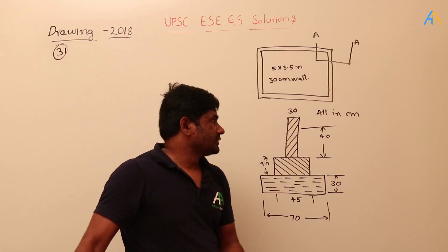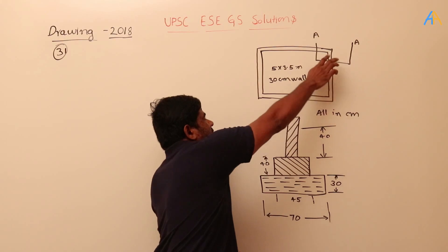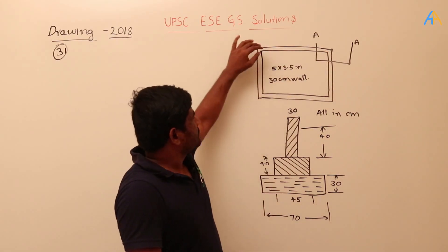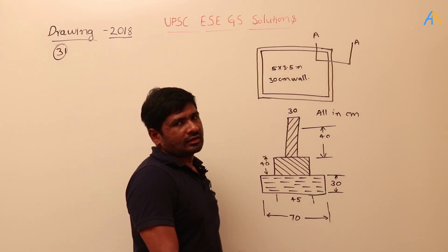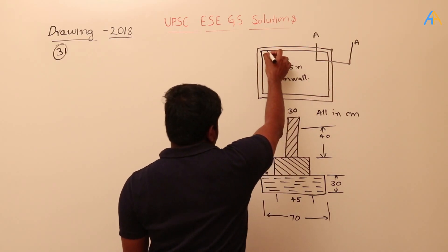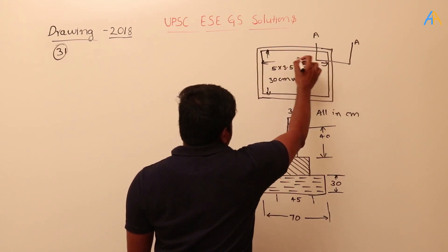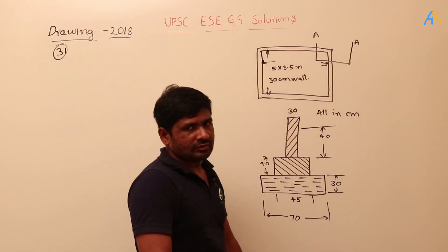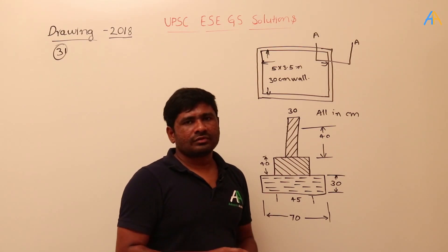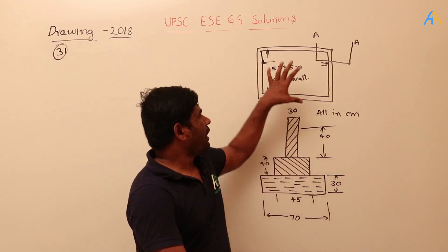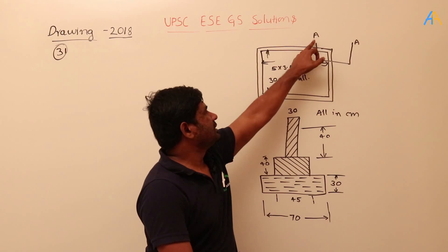First I will explain, then read the problem again. When you see from the top view, something is visible — we have a structure, a wall of 30 centimeter thickness, like a rectangle. The dimensions given are 3.5 meters and 5 meters inside. The wall is constructed on some foundation, but in the top view you can only see the wall — the foundation is not visible.